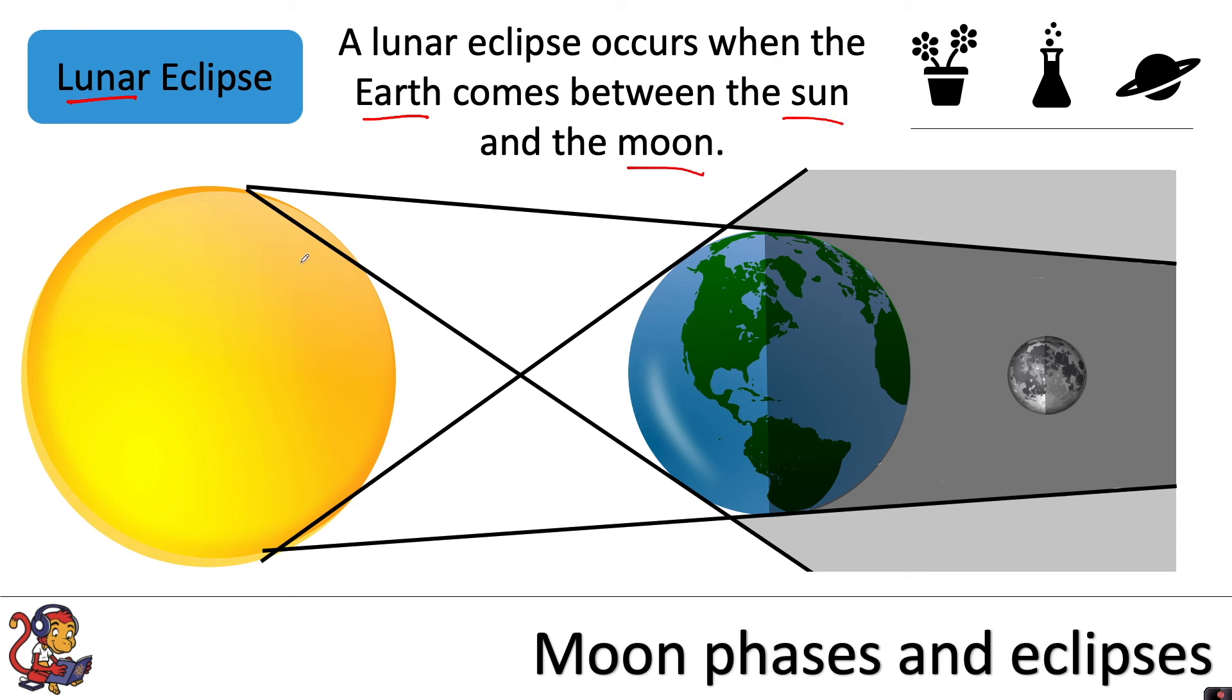And it has to line up perfectly. So obviously we've got the Moon orbiting the Earth and the Earth orbiting the Sun. But if they line up exactly you can have the Earth totally blocking the light that goes to the Moon so it will cast a shadow over the Moon and it will look like temporarily that the Moon has disappeared.